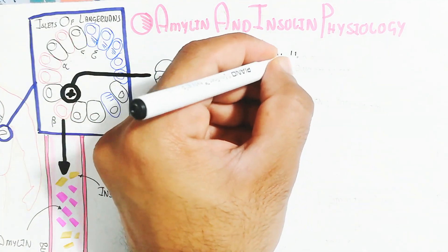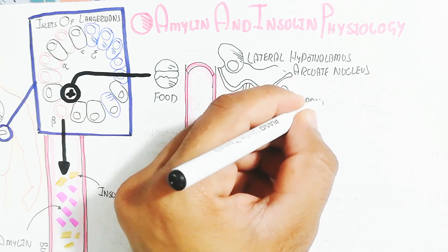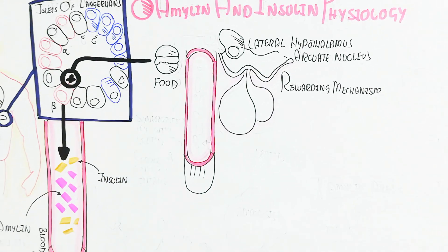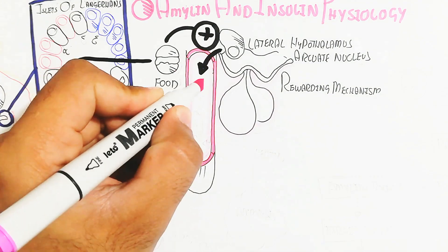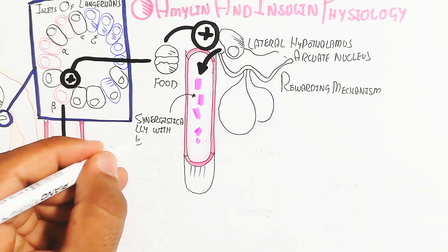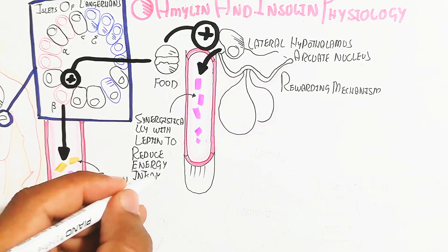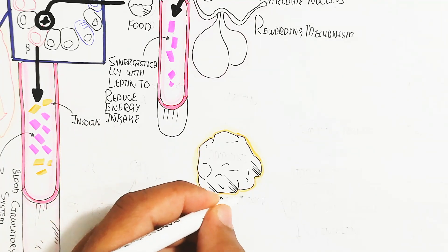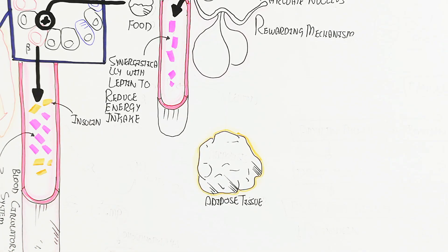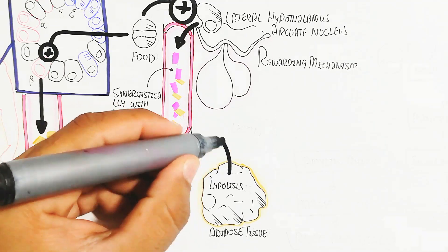Amylin, not insulin, bonds with leptin to reduce energy intake. This occurs in the hypothalamus, which contains the arcuate nucleus as a rewarding mechanism that leads to satiety. The lateral hypothalamus produces amylin that works synergistically with leptin to reduce energy intake. In adipose tissue, when fasting occurs, lipolysis produces leptin, which also triggers amylin from the lateral hypothalamus.